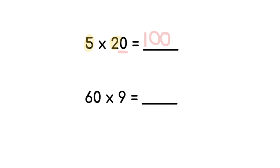Let's try one more. We have 60 times 9. The basic fact: 6 times 9 is 54. And then we'll go ahead and add that one zero to make it 540. 60 times 9 equals 540.